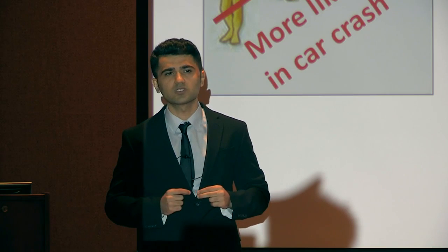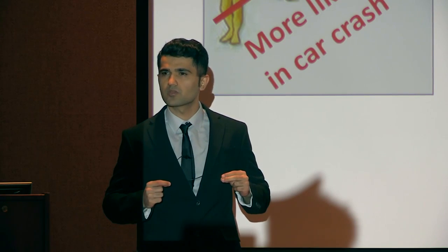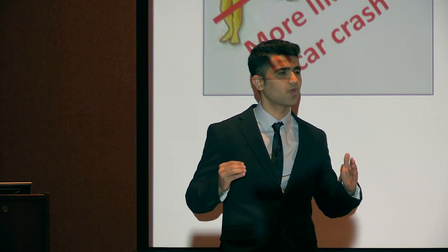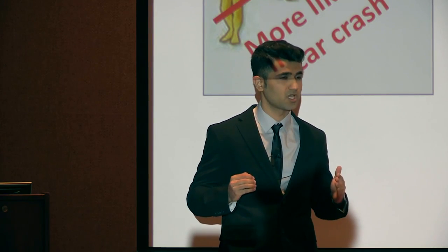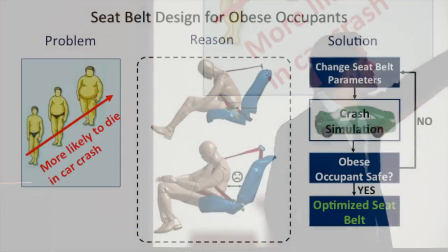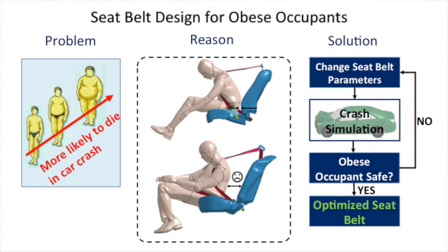Now, if I tell you that more than one-third of the U.S. and more than one billion people worldwide are obese, you would probably agree with me that this population should not be ignored when developing safety tools. What I'll do is find the optimized seatbelt parameters for obese occupants. For that, I run thousands of crash simulations on a supercomputer, each time with a new set of seatbelt parameters, and eventually choose the set of parameters that results in the highest safety for obese occupants.